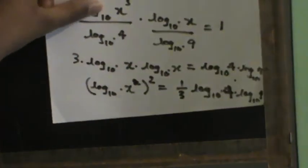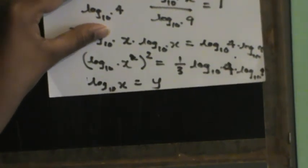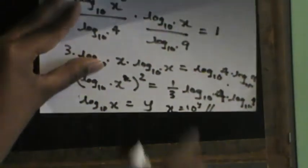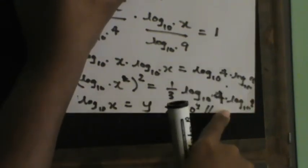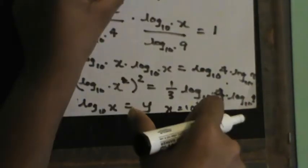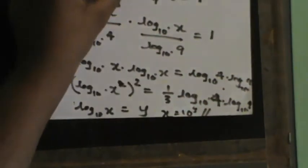To solve for x, I take the square root of both sides. The square root gives me the positive root. I let log x to the base 10 equal y, so x equals 10 to the power of y. To find y, I take the square root of (log 4 base 10 times log 9 base 10) divided by one third, and that gives me y, so x equals 10 to the power of y.